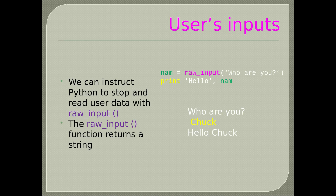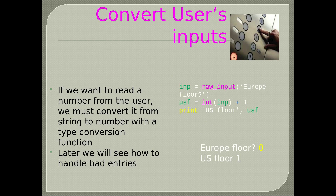Type: name = raw_input('Who are you?') and print('hello,', name) — the result will be hello and then the name. Convert user inputs: if we want to read a number from the user we must convert it from string to number with a type conversion function. inp = raw_input('Europe floor?'), usf = int(inp) + 1, print(usf). Later we will see how to handle bad entries.